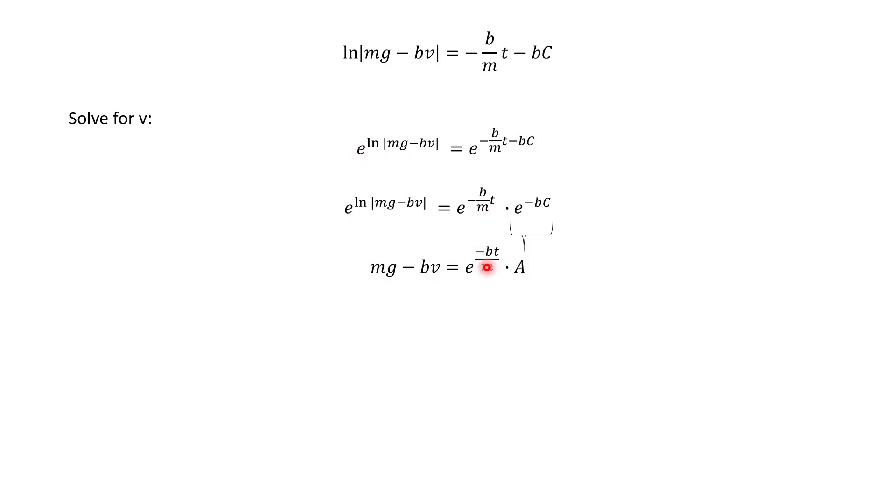On the right side, this e to the negative bc that I separated, all of this is a constant. Remember e is a number, about 2.71. Negative b is a number, and our constant c is a number. So just call this another constant. So I'm going to group all that together and just call it a.